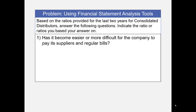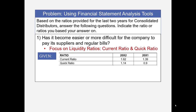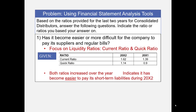The first question: has it become easier or more difficult for the company to pay its suppliers and regular bills? We will focus on liquidity. Of the ratios given, the current ratio and the quick ratio are the best indicators of liquidity. We can see that both of these increased, which means it has become easier to pay short-term liabilities in 20x2, the most recent year.